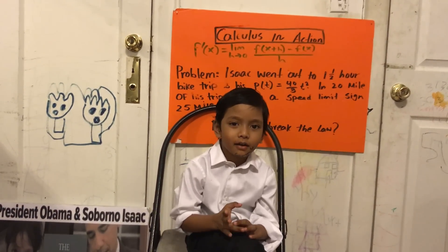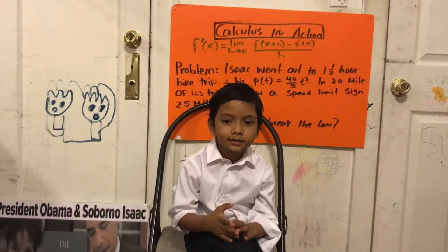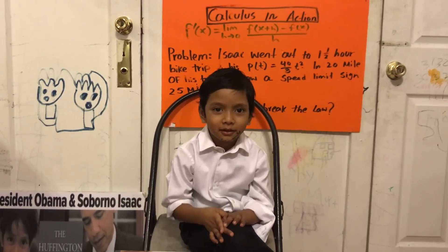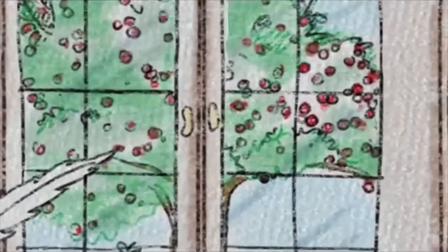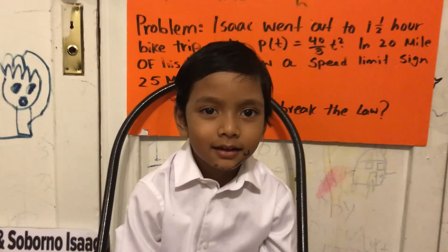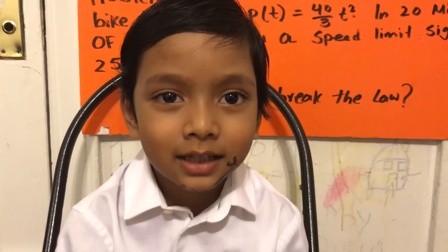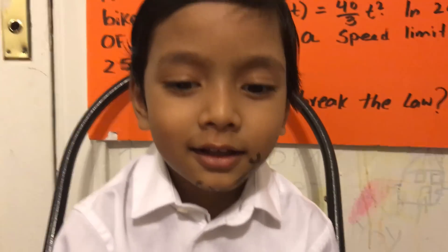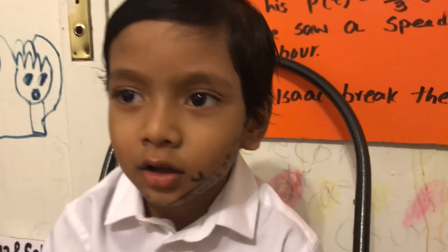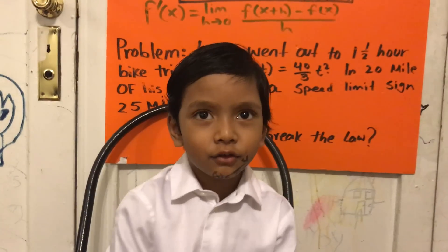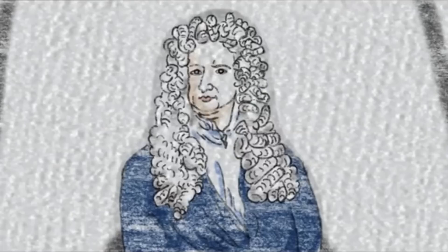One day in 1665, Sir Isaac Newton was sitting under an apple tree. It is said that an apple fell on his head, and then he looked up at the sky and saw the moon. He said, if the apple falls, does the moon also fall? To solve that falling moon problem, he invented calculus.